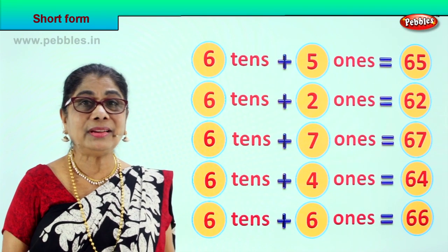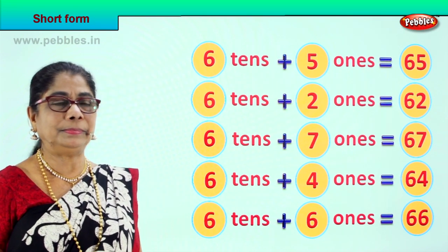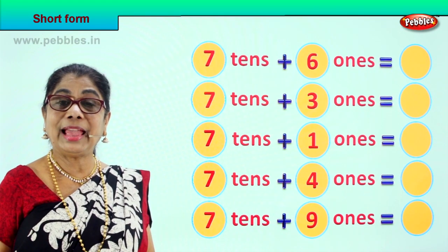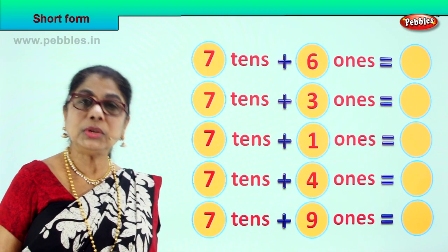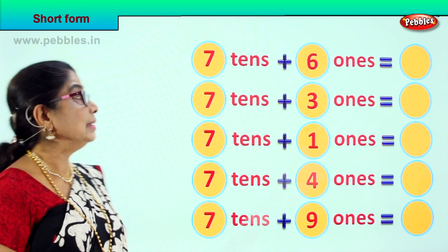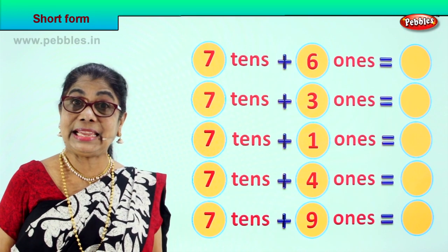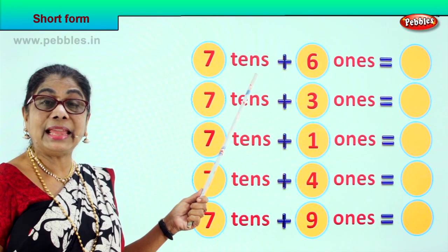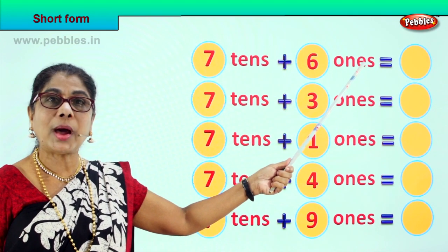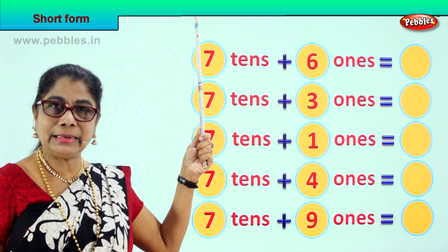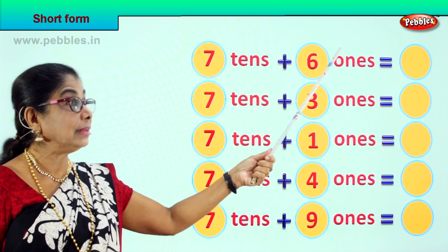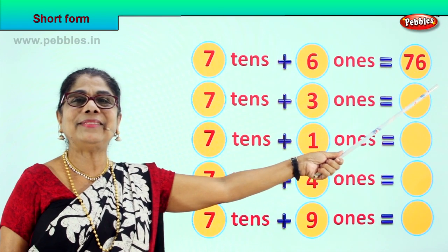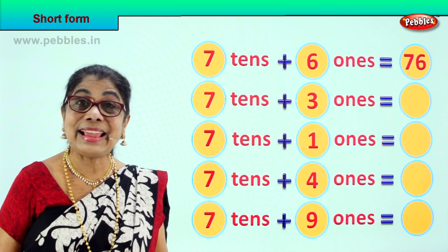Good. Let's take another exercise. Here we have 7 tenths. What is 7 tenths? 7 tenths means 70. Good. Let's read together. 7 tenths plus 6 ones. 7 tenths plus 6 ones is equal to? Good, 76. 7 and 6? 76.